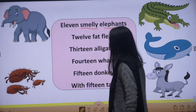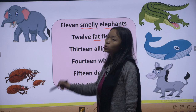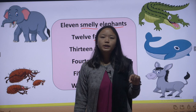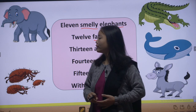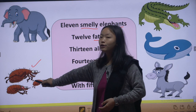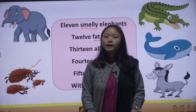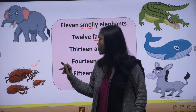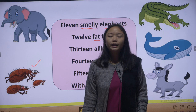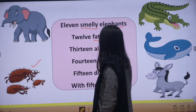Twelve fat fleas — fleas are very small insects. They stick to animals' skin, like dogs. They are smaller than flies. There are twelve fat fleas here.